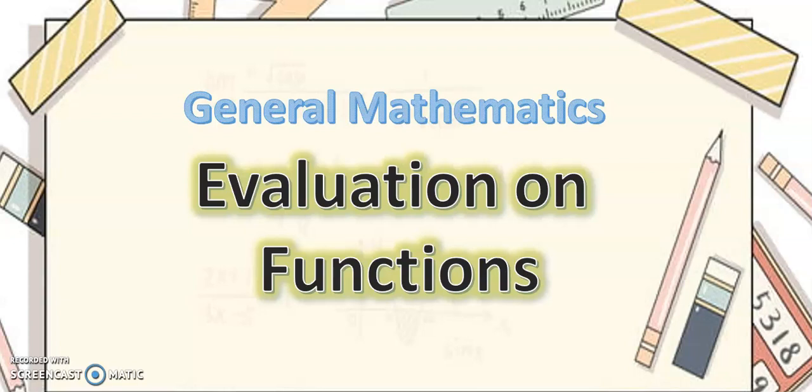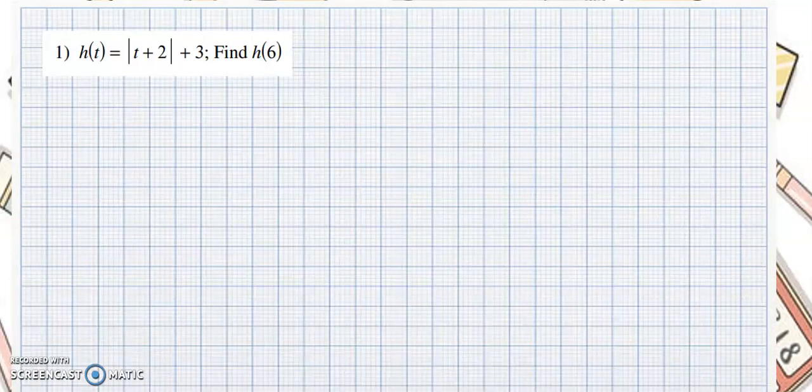Let's have examples for you to further understand. Example number one: we have h of t is equal to the absolute value of t plus 2, plus 3. What we need to do is find h of 6. So if we are looking for h of 6, the value of t would be 6.